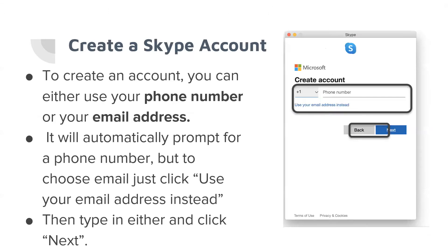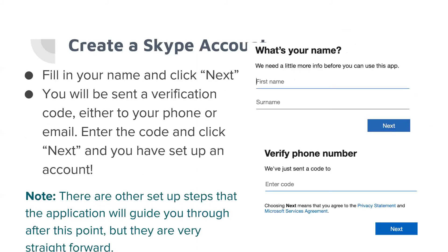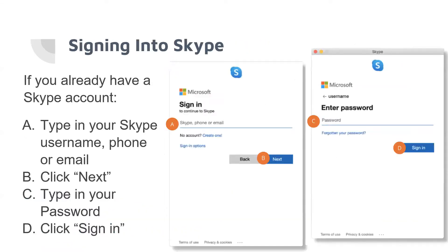To create a Skype account, you can either use a phone number or your email address, then click Next. Fill in your first name and last name, then click Next. If you already have a Skype account, simply type your mobile number or email address and your password, then click Sign In.